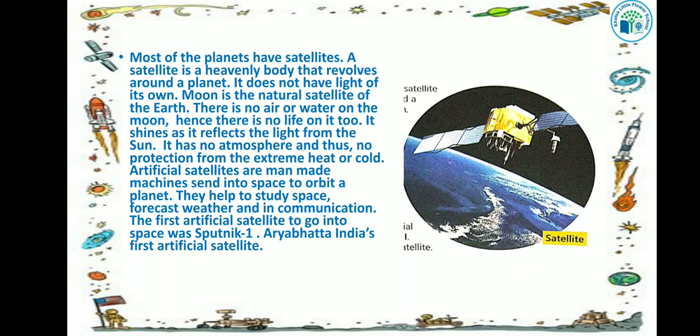Artificial satellites are man-made machines sent into space to orbit a planet. They help to study space, forecast weather, and aid in communication. The first artificial satellite to go into space was Sputnik 1, and Arya Bhatta was India's first artificial satellite.